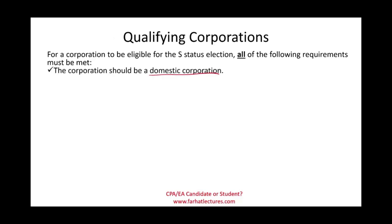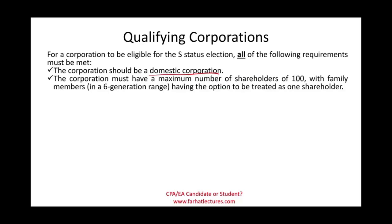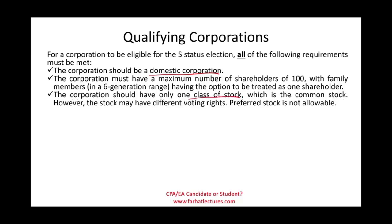The qualifying requirements are: first, the corporation must be a domestic corporation — it must pay taxes in the U.S. Second, the corporation can have a maximum of 100 shareholders. Family members can elect to be treated as a single shareholder, so a multigenerational family counts as one. Third, the corporation must have only one class of stock, which is common stock — though you can have voting and non-voting variants within that class.